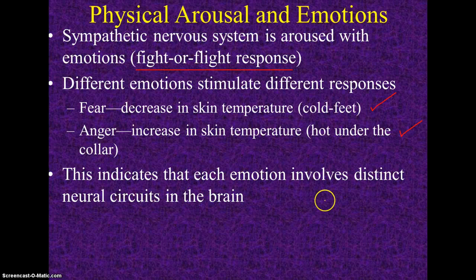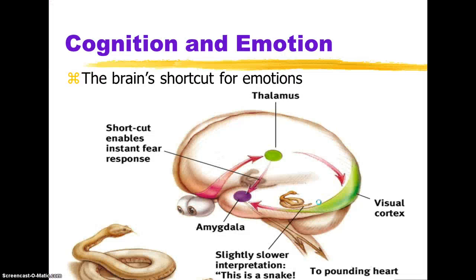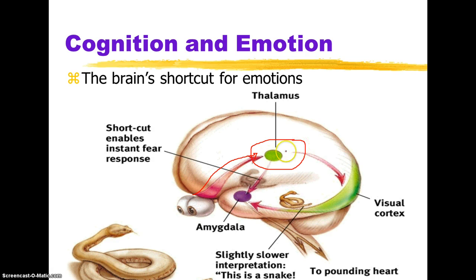We know that each of the emotions tends to involve a distinct neural circuit in the brain. So how do we deal with cognition versus the James-Lange theory, where it automatically leads to the response? One thing researchers are thinking now is that in the limbic system, there seem to be different ways that messages can be sent. If a visual comes in and arouses the thalamus — the thalamus is sort of the director — it can send a direct message to the amygdala: danger, danger, there is a snake.